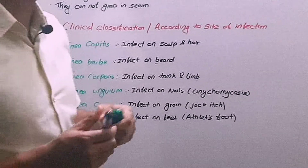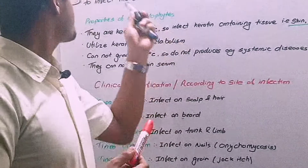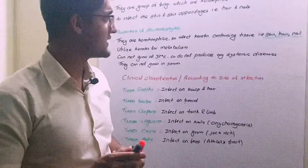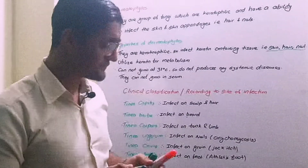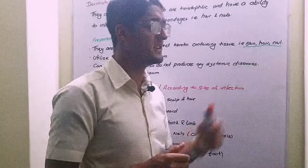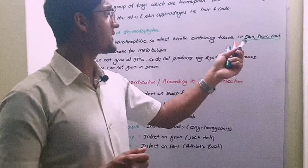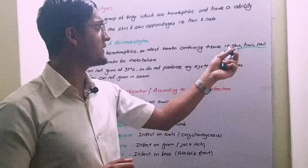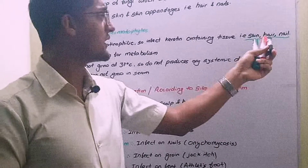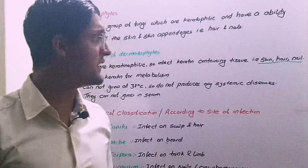Now let us discuss about the lab diagnosis of dermatophytes. For lab diagnosis, first we have to collect the sample. Sample collection is simply skin, ear and nails. We have to collect the sample from the site of infection — if it infects the skin we will take skin, if it infects the ear we will take ear, and if it infects the nails we will take nails.